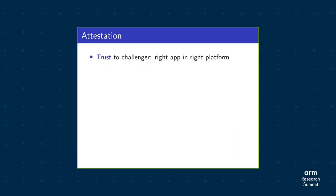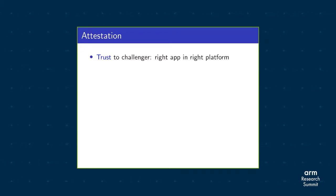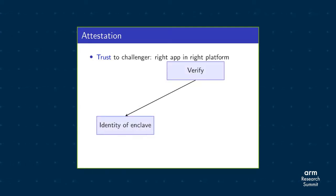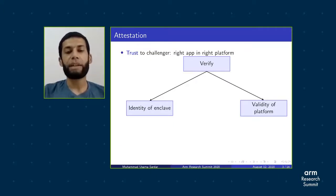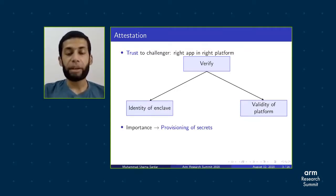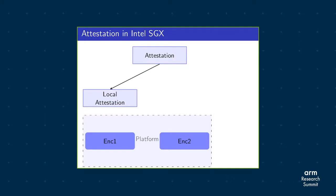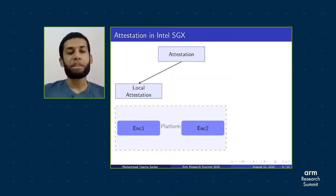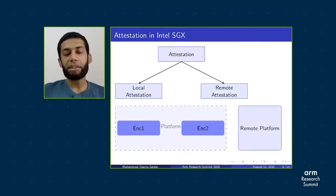Most prominent trusted execution environments provide an attestation mechanism, which is basically a mechanism to give trust to the challenger that the right application is running inside the right platform. More specifically, this verifies two main things: the identity of an enclave (for example its hash), and the validity of the platform — that the platform is real and not an emulated one potentially controlled by an adversary. Once attested, a remote party can then provision secrets. There are two main types of attestation in Intel SGX: local attestation, where an enclave proves its identity to another enclave on the same platform, and remote attestation, where an enclave proves its identity to a remote party.